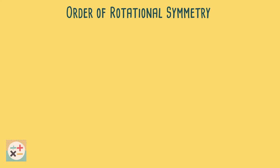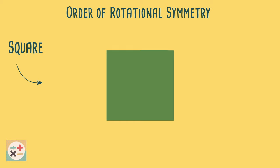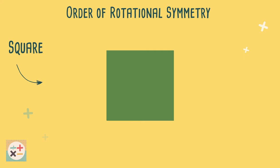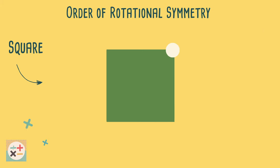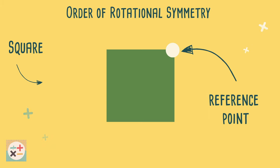Let's look at an example. Here is a square and we are going to see if it has rotational symmetry and if so what is the order of rotational symmetry, i.e. the number of times it will look the same when we rotate it 360 degrees around its centre point. Using tracing paper if you have some is a great way to test the rotational symmetry of different shapes, but you can also do this without tracing paper. It can also help to mark off a reference point on the shape that you can use to keep track of.